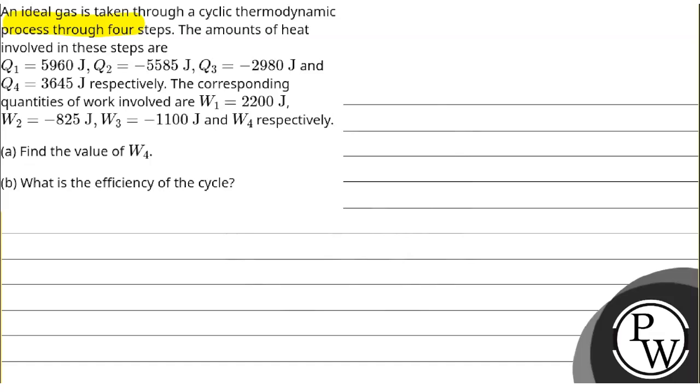The amount of heat involved in these steps are: the value of Q1 is 5960 Joules, Q2 is minus 5585 Joules.